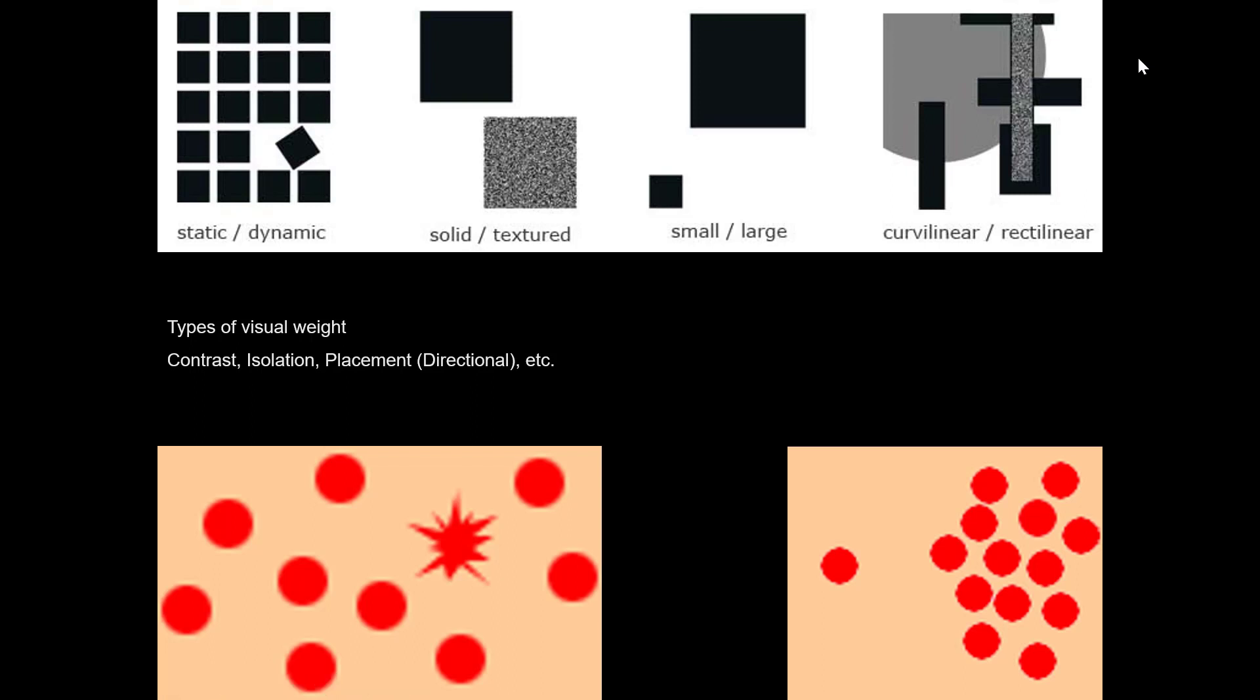There is a certain amount of subjectivity, though, in terms of what's going to have the most visual weight. For most of us, it's going to be the textured thing because it's A, textured, and B, on top. Some people, though, are going to come over and look at the high contrast of this one rectilinear form all by itself, especially where it's surrounded by so much white.